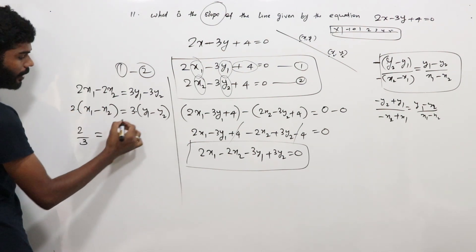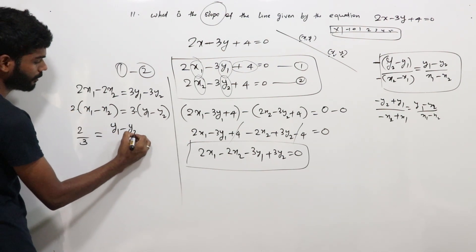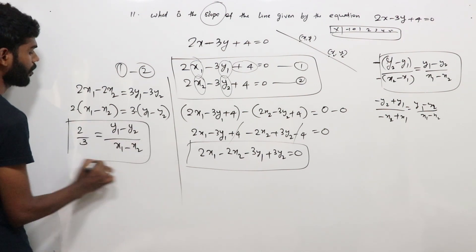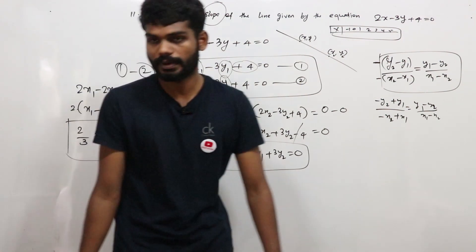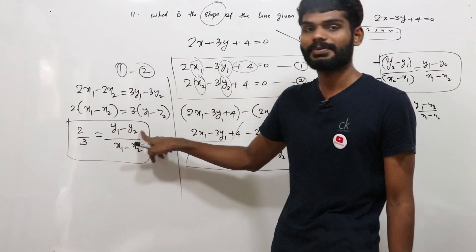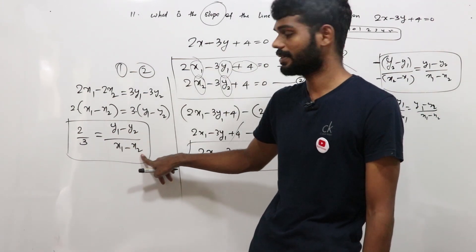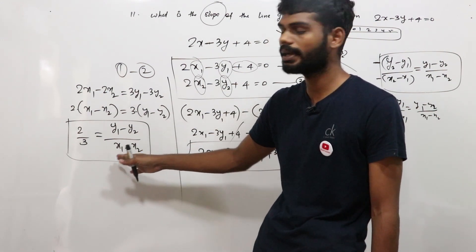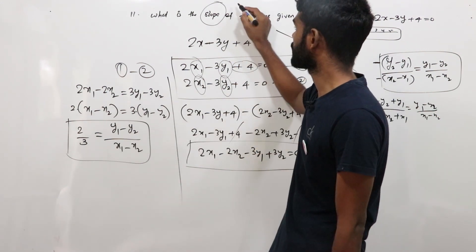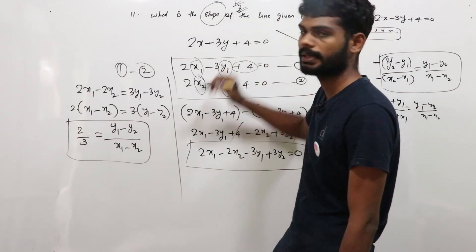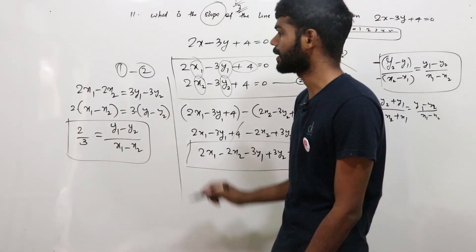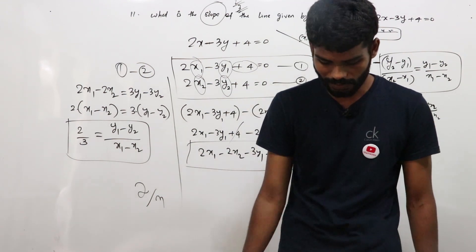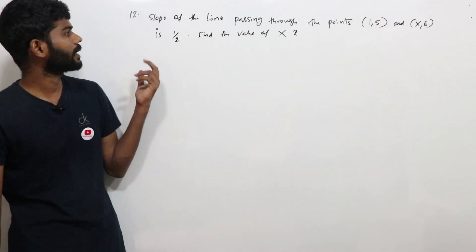From this, y1 minus y2 by x1 minus x2 equals 2 by 3. Substituting into the slope formula, the slope of the line 2x minus 3y plus 4 equals 0 is 2/3.